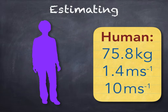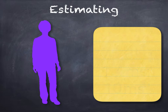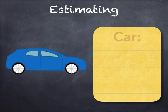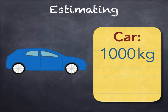Now, in a past paper question from a revised higher, pupils had to calculate the kinetic energy of a car. What do you think the mass of a small family car would be in kilograms? Around about 1,000 to 1,400 kilograms.